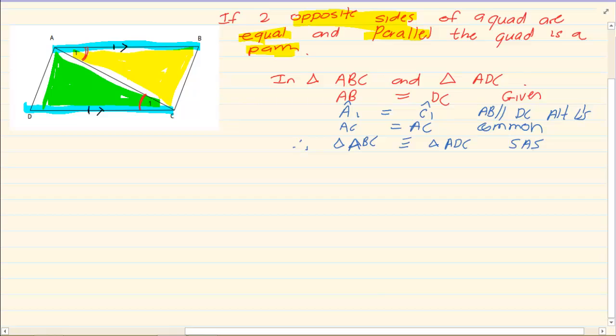Now immediately if I know the triangles are congruent, then I can do deductions. If A1 is equal to C1, then I can say that AD is equal to BC. Now if AD is equal to BC and it is already given that AB is equal to DC, then ABCD is a parallelogram because the opposite sides are equal.